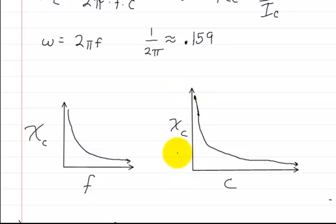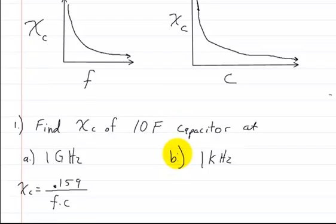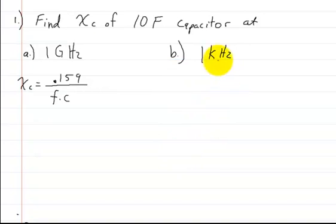Okay, so now we've got those down there, now let's go on and start doing some problems. So the first problem is I want you to find the capacitive reactance of a 10 farad capacitor, first at 1 gigahertz, and then at 1 kilohertz. So here I already wrote the formula, and I wrote it with a 0.159 instead of writing the 2 pi.